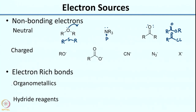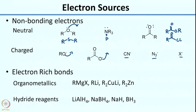Other electron sources involve charged species — your typical nucleophiles: X⁻, N₃⁻, CN⁻, RO⁻, O⁻. Electron-rich bonds are another source, such as organometallic species like Grignard reagents, organolithium reagents, R₂CuLi, and R₂Zn — all examples where R is electron rich. You can also have hydride reagents, which are sources of H⁻: LiAlH₄ (lithium aluminum hydride), sodium borohydride, sodium hydride, and borane-based reagents.